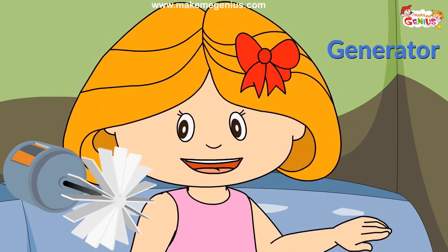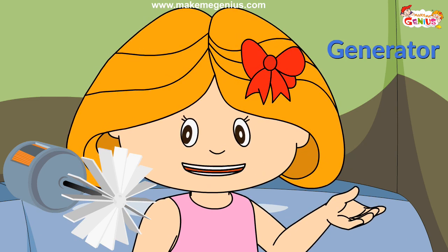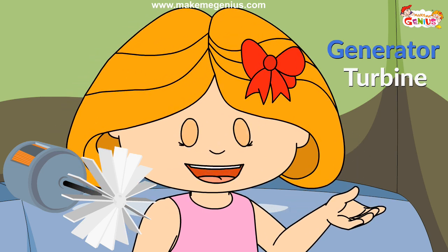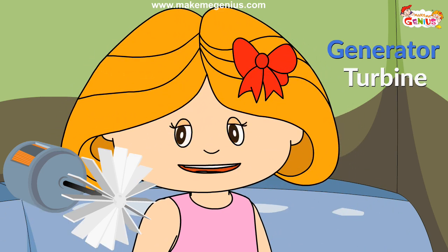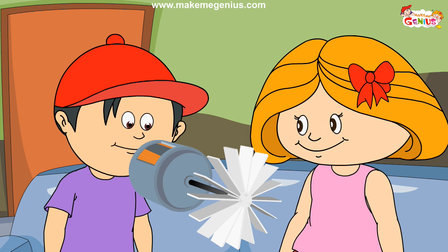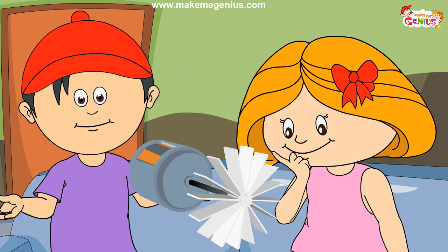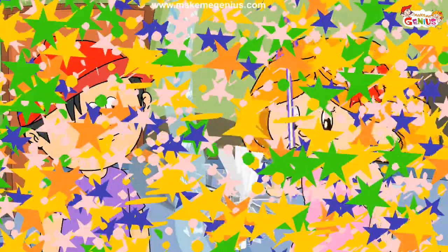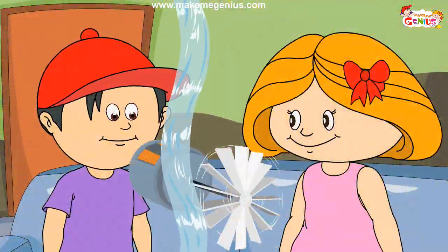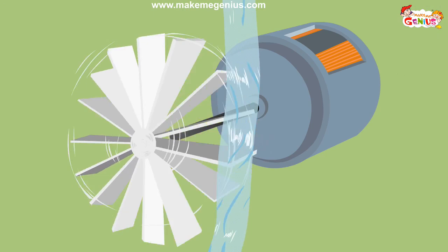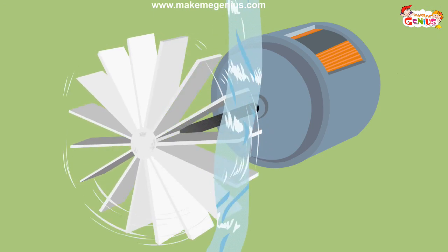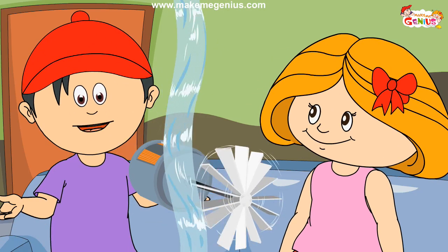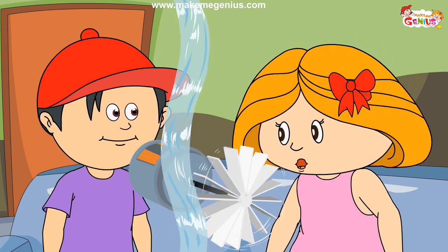Friends, remember the generator — the machine to make electricity. Now remember the turbine — that is the second most important tool. A turbine helps the generator to work so that it can produce electricity. But how does the turbine help in turning the generator? In some cases, a lot of water is dropped on it — the water makes it turn. When the turbine moves, the shaft of the generator also moves. So water helps in running the generator!